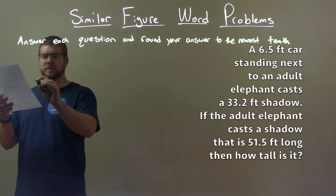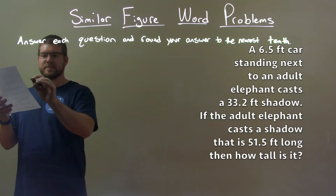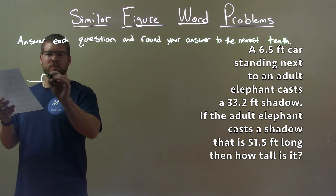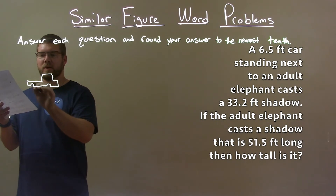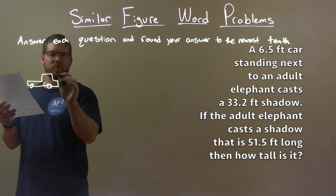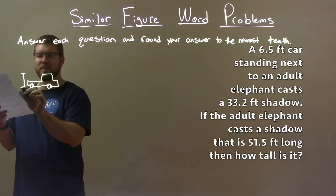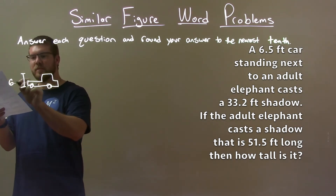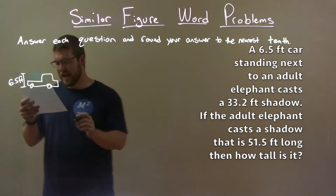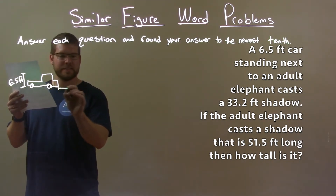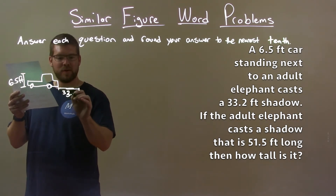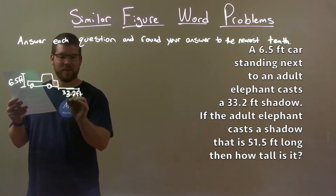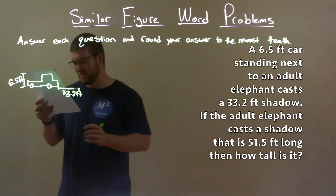We have this car — let's say it's a truck. The truck has a height of 6.5 feet, and it casts a shadow here. That shadow length, not to scale, is 33.2 feet.